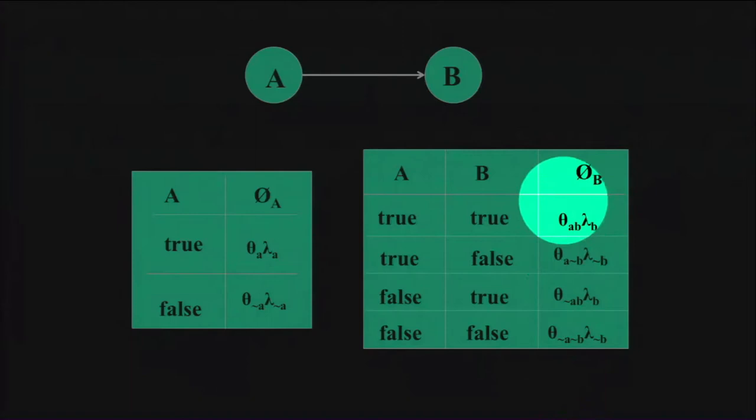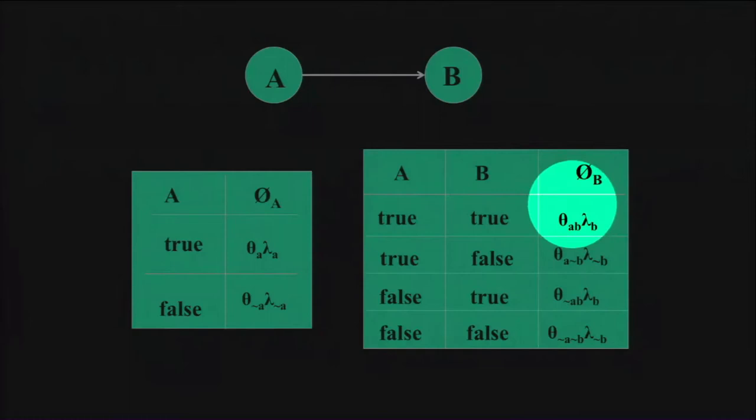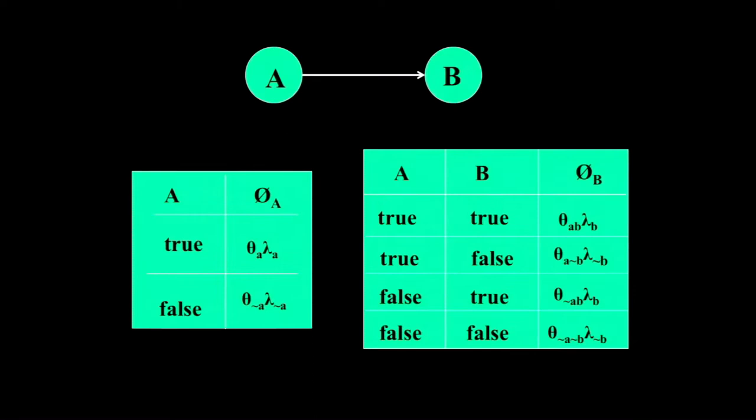We're being loose on notation here — this literally should be B given A, and this should be not-B given A, and so on. But we're dropping the conditioning bar because there's no ambiguity. Every row gets an indicator for the variable of that CPT together with the parameter for that row.